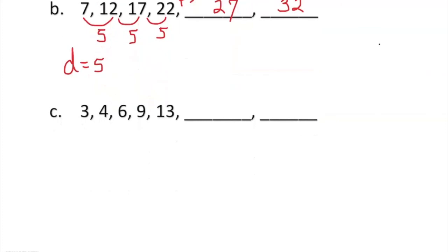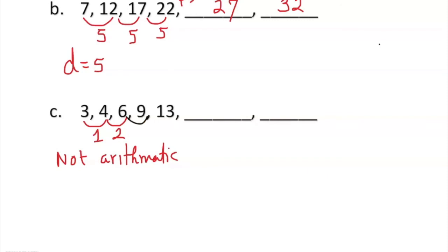Now this next sequence — the common difference here is 1, then 2. I see different differences, so I cannot call it a common difference anymore. This is not an arithmetic sequence. But I can still use inductive reasoning: there's something going on — the difference increases by 1 each time: 1, 1, 1. So the next difference should be 1 too, meaning I add 5 to get 18, then 6 to get 24. I can find the missing number, but I don't label it as arithmetic.